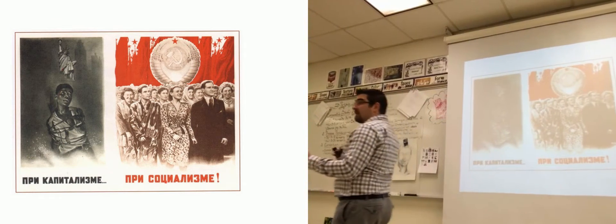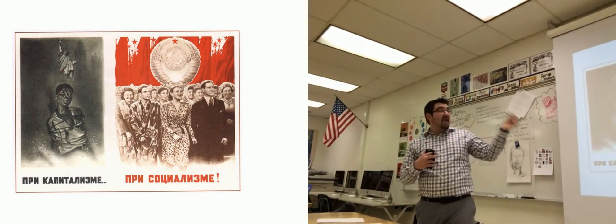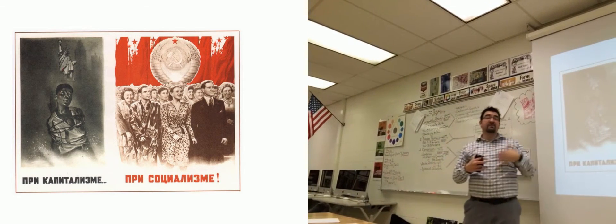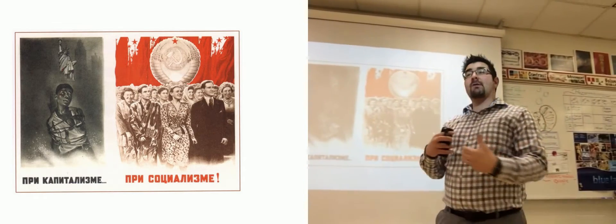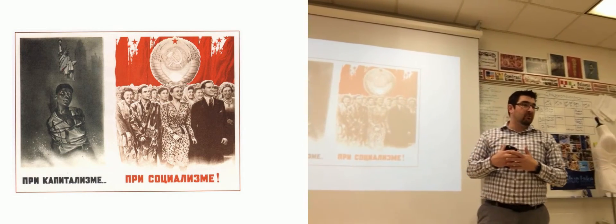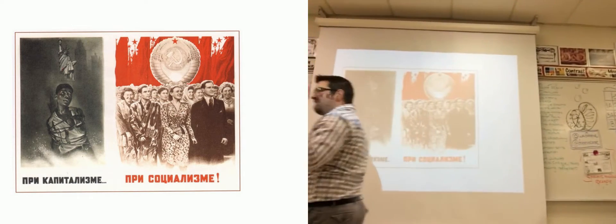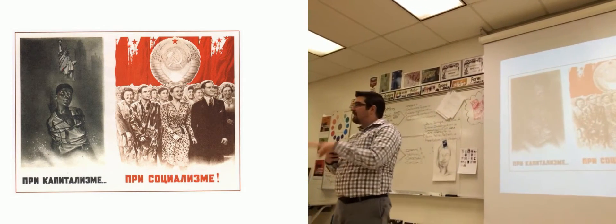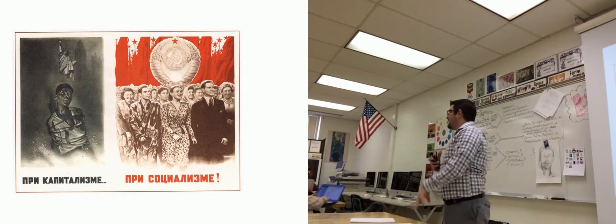By the 1950s, the NAACP was bigger and stronger, and they took a case in Topeka, Kansas. They were going to support Linda Brown, this little girl who didn't want to walk past the white school on her way to her black school. They would argue in the Brown v. Board of Education case that all of these separate but equal laws, since Plessy v. Ferguson, were inherently unequal.